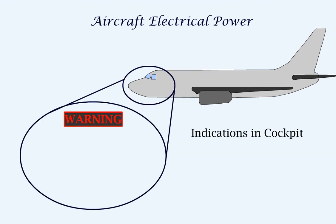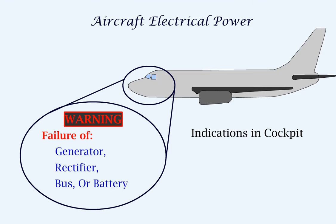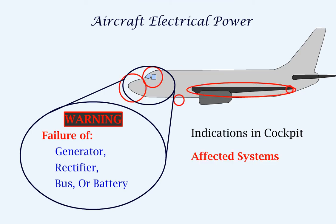Indications are given in the cockpit in case of failure of the generator, rectifier, bus or battery, along with a list of systems that are affected because of the failure.